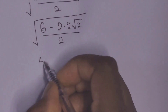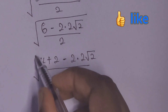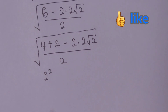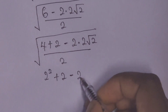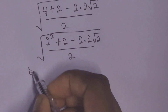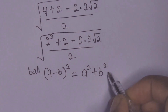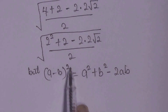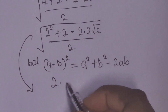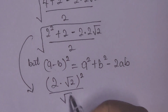So 4, we can rewrite it as 2 to the power of 2. We can rewrite the expression as 2 squared plus 2 minus 2 times 2 root 2, all over 2. Recall that a minus b squared equals a squared plus b squared minus 2ab. Applying this, we get 2 minus root 2, all squared, over root 2 squared.